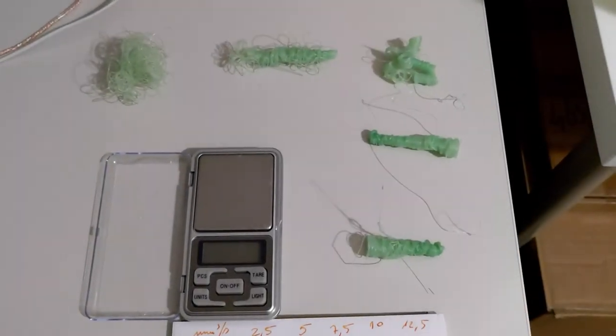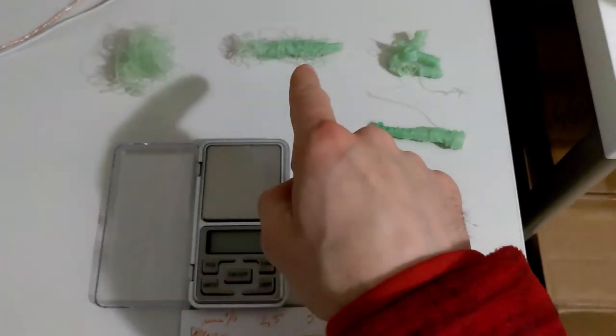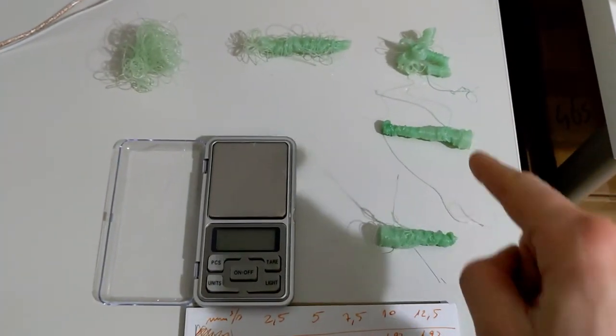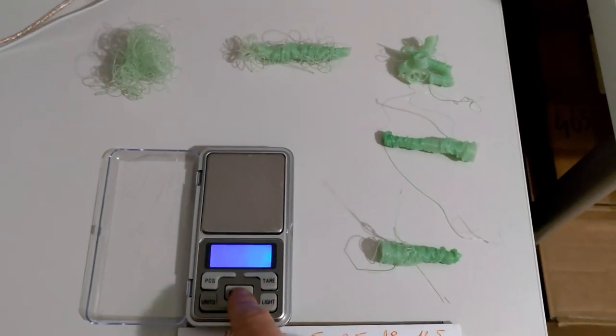Here are the results of the extrusion test of the hotend: 2.5, 5, 7.5, 10, 12.5 cubic millimeters per second. There is a scale.